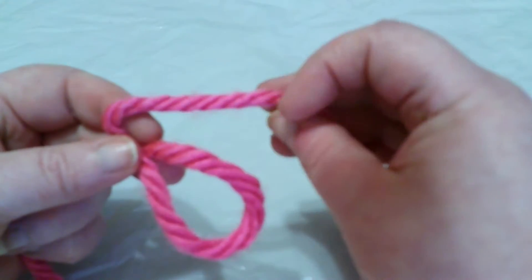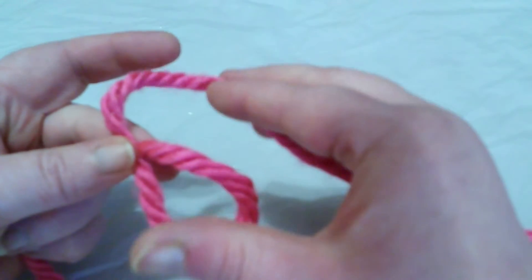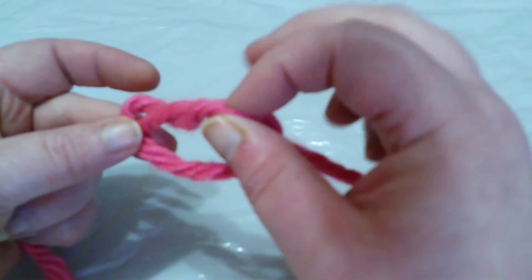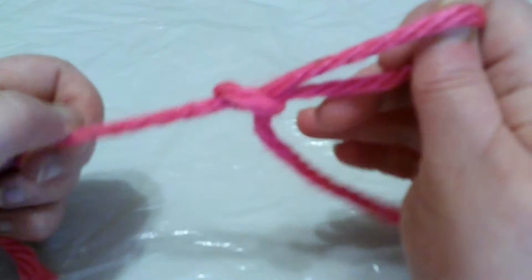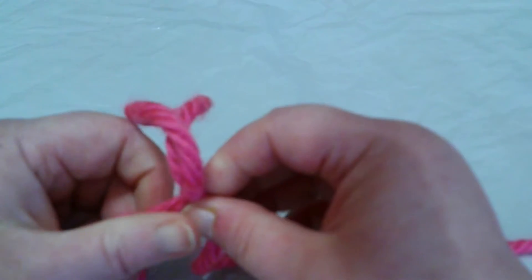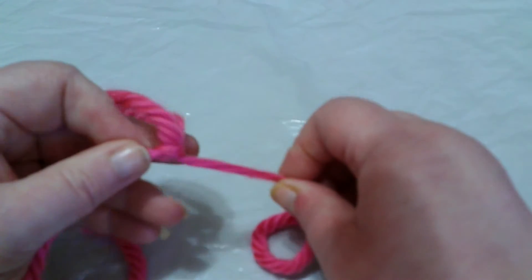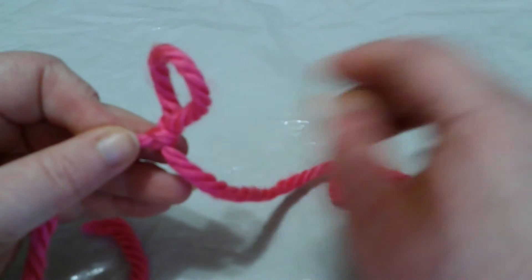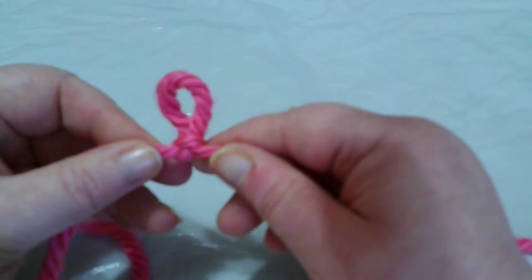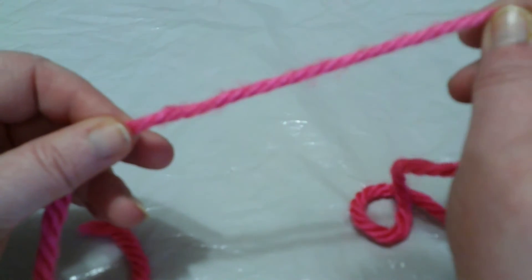Okay, you see the yarn behind? You're going to take it and pull it through your little circle here. You're going to tighten it and then you can adjust your knot like that. This is a slipknot. I'm going to show you again—if you notice, I keep pulling and the knot will just come right out.